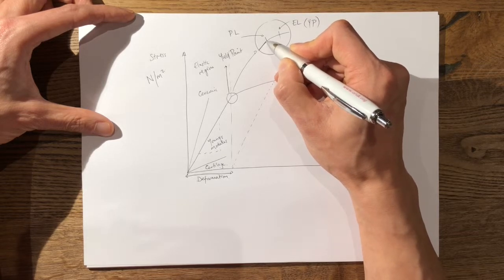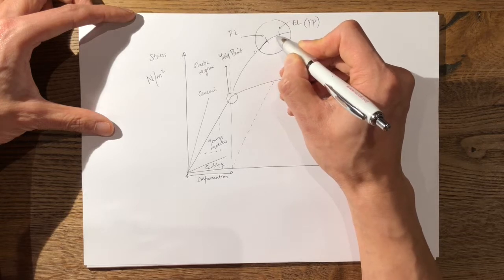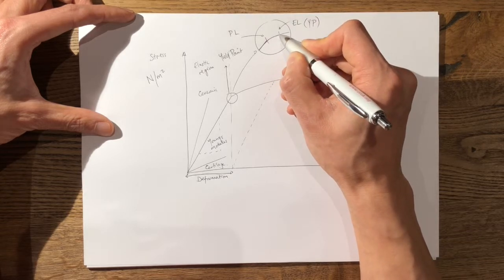However once it transitions past the proportional limit it no longer follows Hooke's law of proportionality.